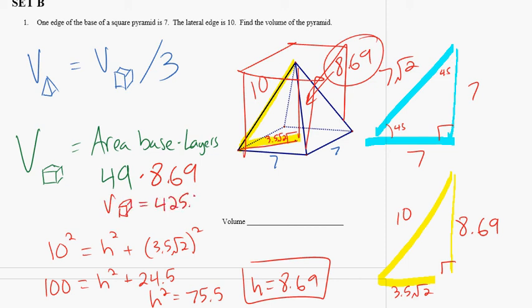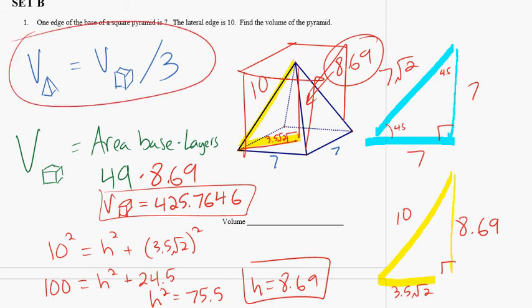That would be the volume if all the layers were the same. Now we know that all the layers are not the same. We know that we're dealing with a pyramid. So what we have to do now is divide the volume of the prism by 3 because we know the volume of the pyramid is one-third of the volume of the prism. So we take that 425 and divide by 3. So the volume of the pyramid is 141.92 cubes.